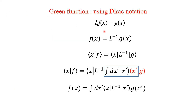We will construct the Green's function using Dirac notation, which is easier to understand. Let L·F(x) = G(x), so F(x) = L-inverse of G(x). F(x) can be written in Dirac notation as ⟨x|F⟩, meaning F represented by x, that is F(x). From the Dirac definition, this is a function of x, where the bra indicates the basis of the function x. The right-hand side can be written as ⟨x|L-inverse|G⟩.